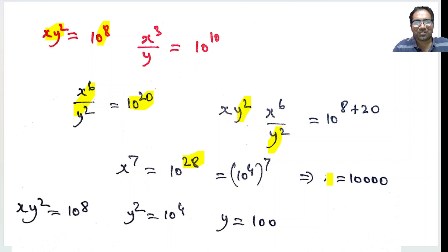So, what does that mean? x = 10⁴ which is 10,000, but xy² = 10⁸. So, y² = 10⁸ by 10⁴ which is 10⁴.